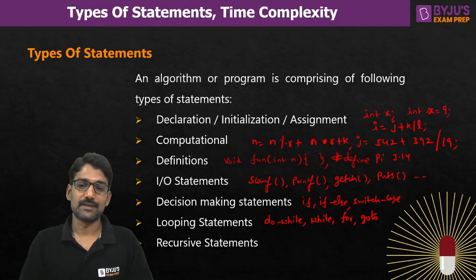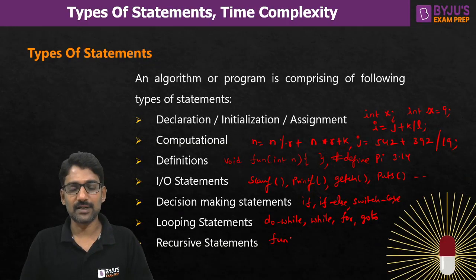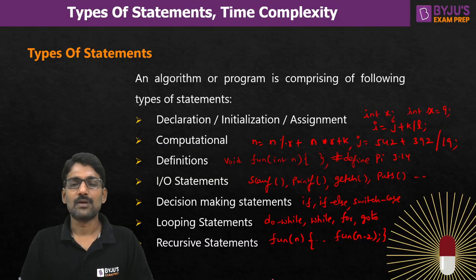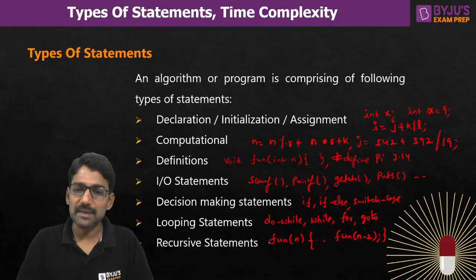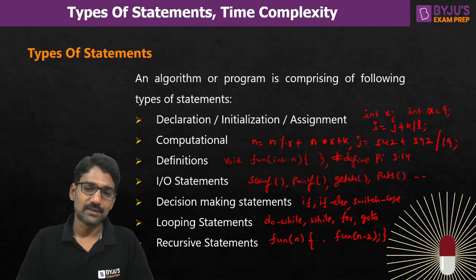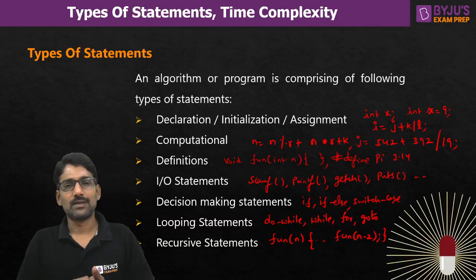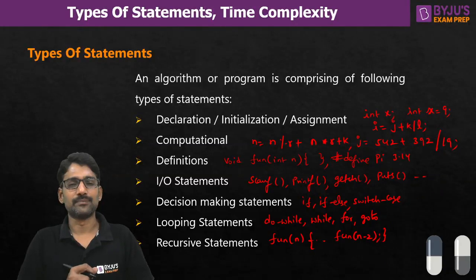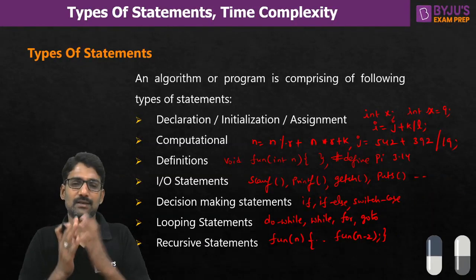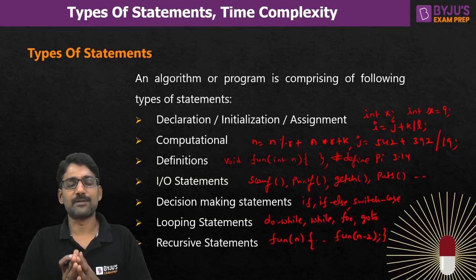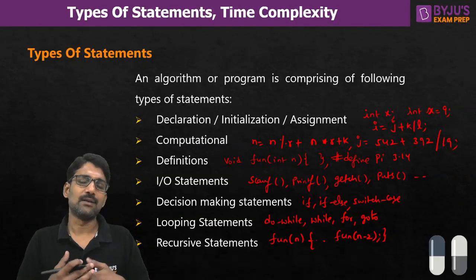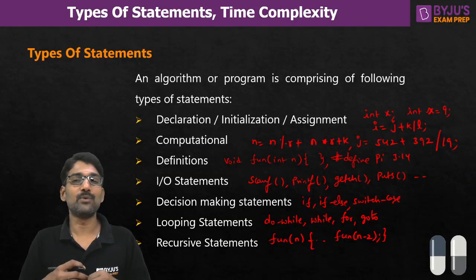Finally, there are recursive statements — where inside a function 'fun(n)' you call the same function, such as 'fun(n - 2)'. So any algorithm or program will mostly contain these types of statements. Now let us understand how we calculate the time complexity for each of these different statement types.